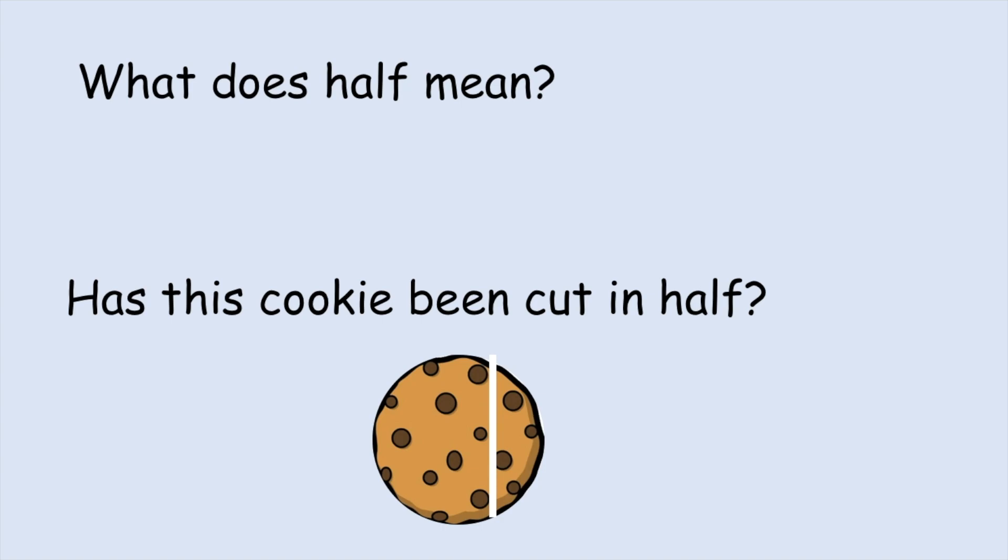Now yesterday we learnt what half means. So pause the video to tell your adult what half means, and has this cookie been cut in half? Pause the video to talk to your adult. A half is a fraction. When you half something you get two equal parts. Each part is the same. Remember, equal means the same, and when we are halving we are getting two parts.